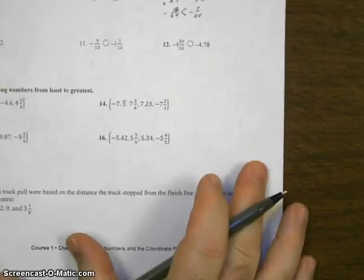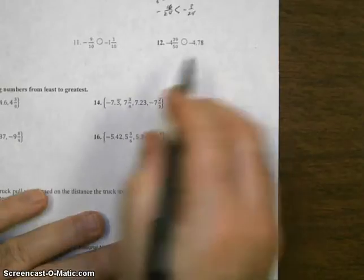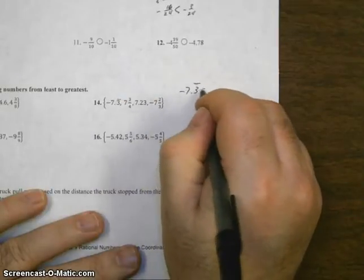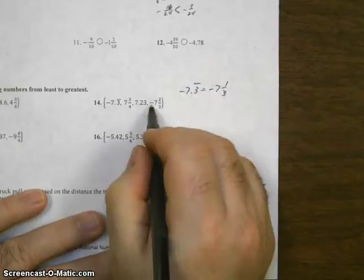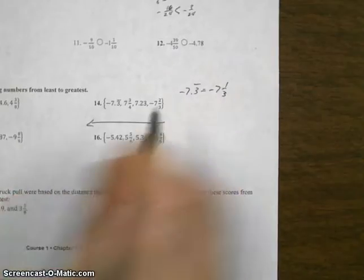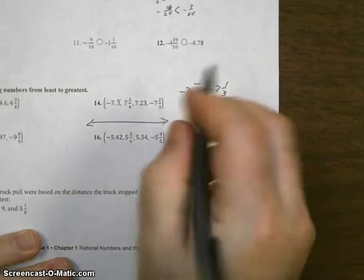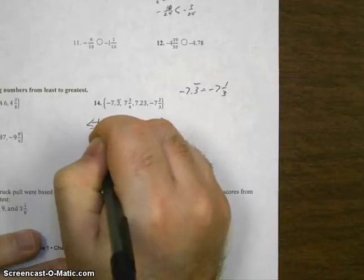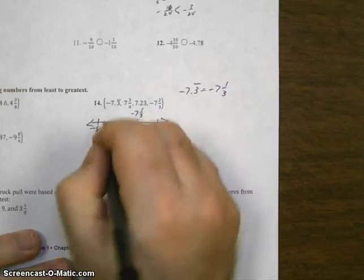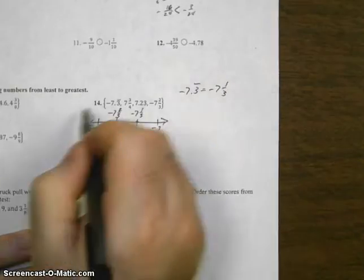We put the numbers in order. The negative numbers are always less than the positive numbers. So negative seven and three-tenths repeating — remember, negative seven and three-tenths repeating is negative seven and one-third. Comparing that to negative seven and two-thirds: negative seven and one-third is closer to zero. If we look at the number line, negative seven and one-third is there, negative seven and two-thirds is there. Two-thirds is farther from zero than one-third in this case, because it's negative.